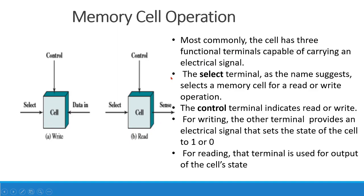Most commonly, the cell has three functional terminals capable of carrying an electrical signal. The first terminal is the Select Terminal — as the name suggests, it selects a memory cell for a read or write operation. The second is the Control Terminal, which indicates whether the operation is read or write — the mode of operation.